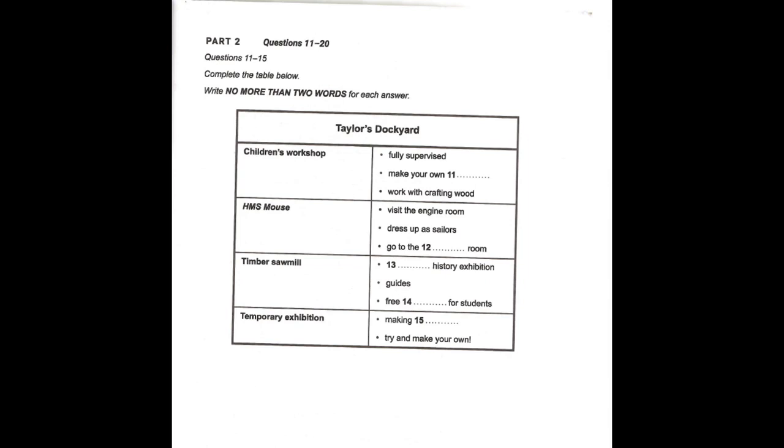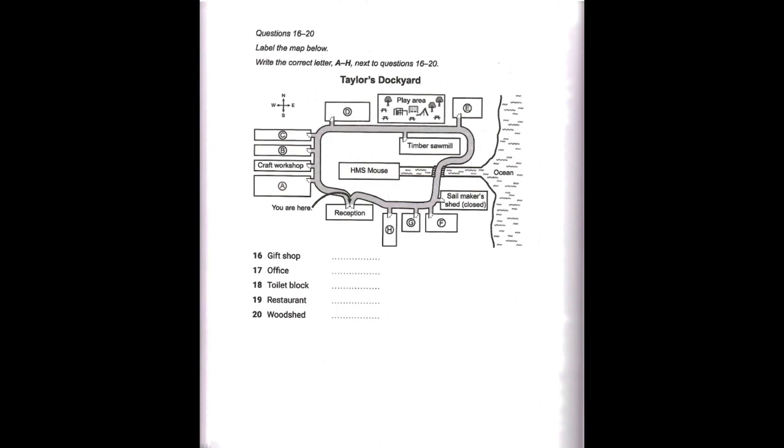Finally, I want to tell you about our temporary rope-making exhibition. This is housed on the upper floors of the mill. You'll discover why rope was so important to the workers of the dockyard, and even try your hand at twisting some rope. It's not easy, though. Right. Have you all got your maps handy? So, as you can see, here we are at the front of reception, directly in front of our star attraction HMS Mouse. We suggest going round in a clockwise direction, so that you end up at the gift shop, which is just to the right of the reception building, as you look at your map. There you can buy all sorts of souvenirs of your visit.